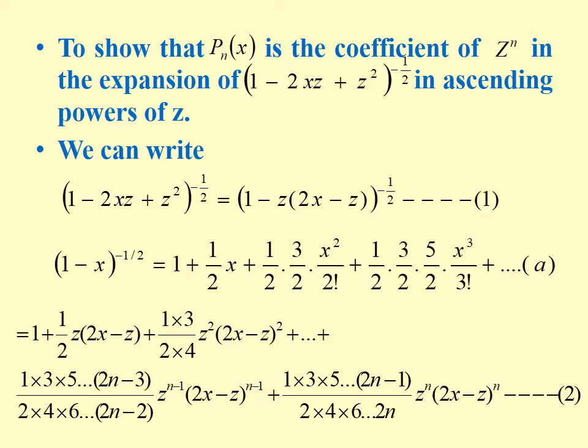Writing equation 1, we get: 1 plus (1/2)z(2x minus z) plus (1·3)/(2·4) z squared (2x minus z) squared, and continuing up to (1·3·5···(2n-3))/(2·4·6···(2n-2)) z power (n-1) (2x minus z) power (n-1) plus (1·3·5···(2n-1))/(2·4·6···2n) z power n (2x minus z) power n. Now we have to find the coefficient of z power n in each term.